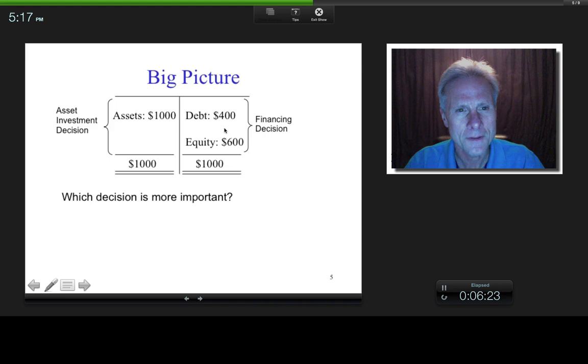Now, it doesn't mean that this side is unimportant. This side is also very important. So, in other words, you can make great decisions on this side and it can be undone by bad decisions on that side. In any case, no matter how good your decision is on this side, if you don't have a good business plan, in other words, what a company spends its money on, then that's bad news.